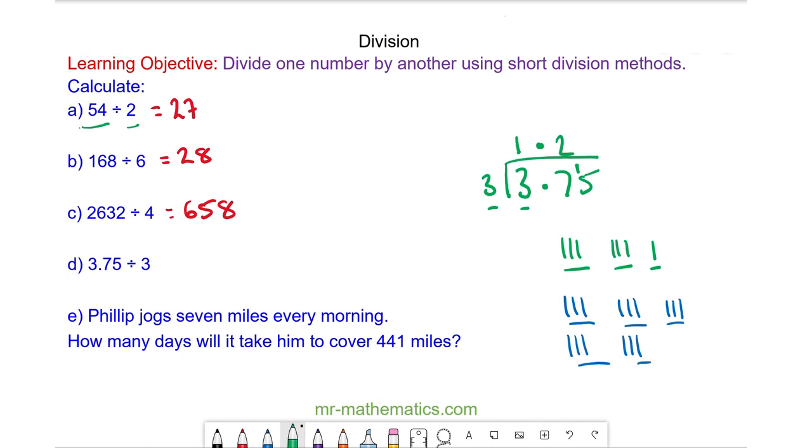And 3s into 15 you can see goes 5 times. So 3.75 divided by 3 is 1.25.